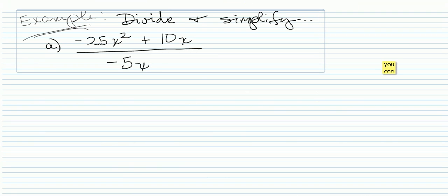So here I have a binomial divided by a monomial. Two terms on top in our numerator and one term in the denominator. So what we can do, for however many terms we have in our numerator, we're gonna set up separate fractions.